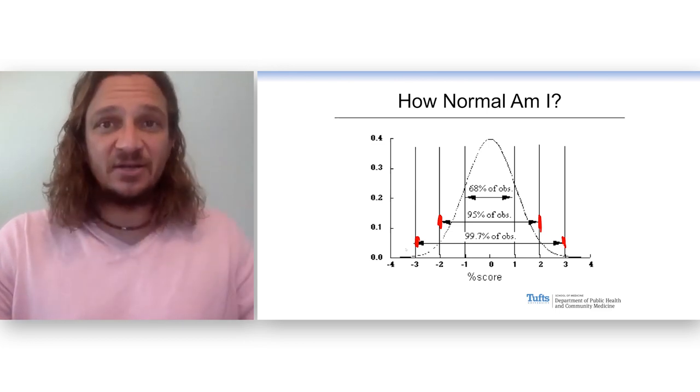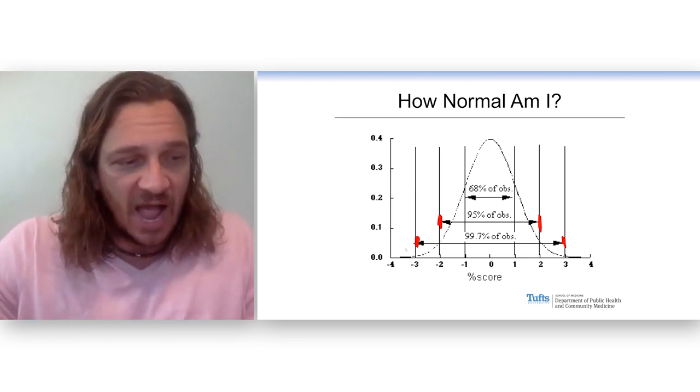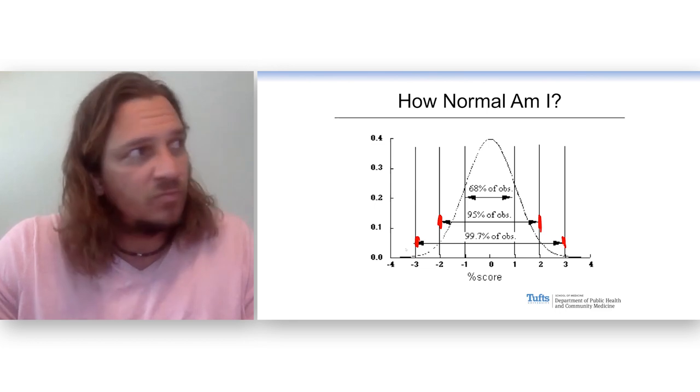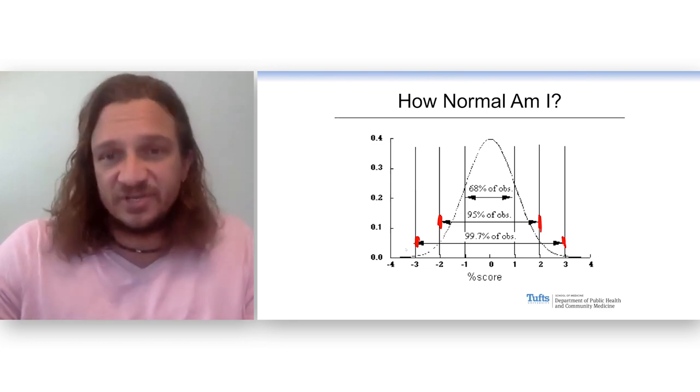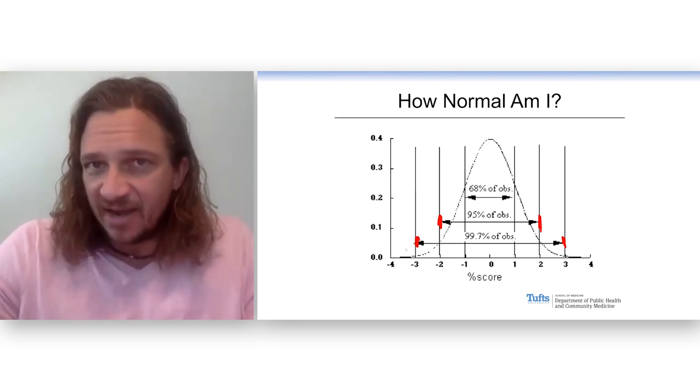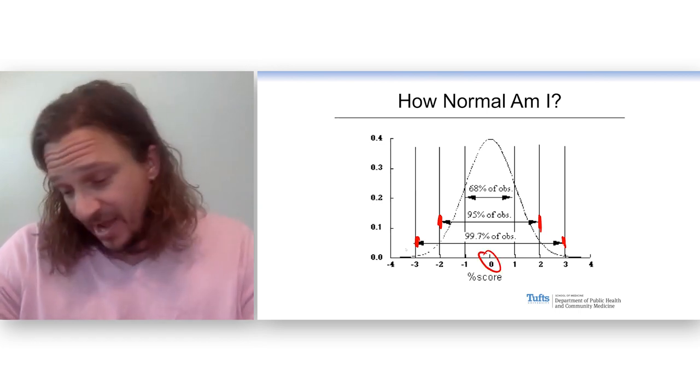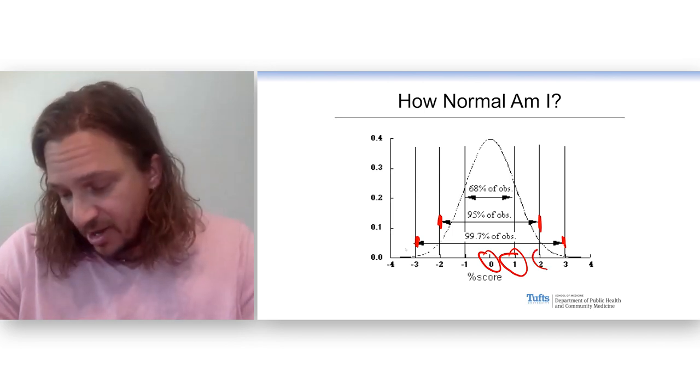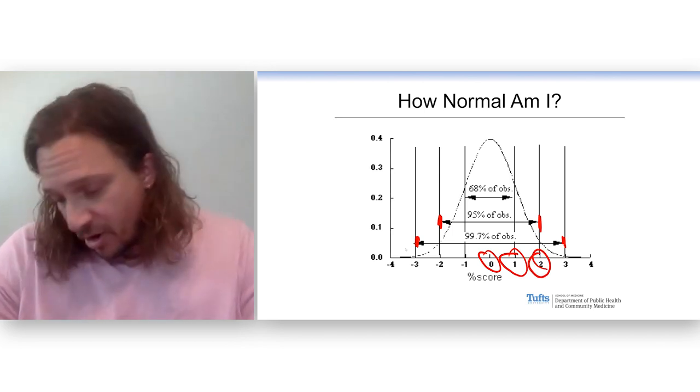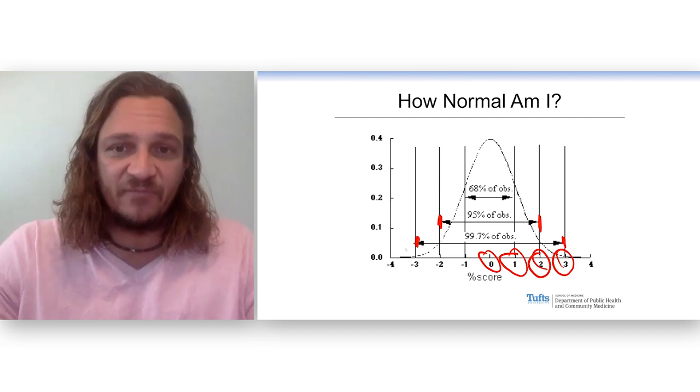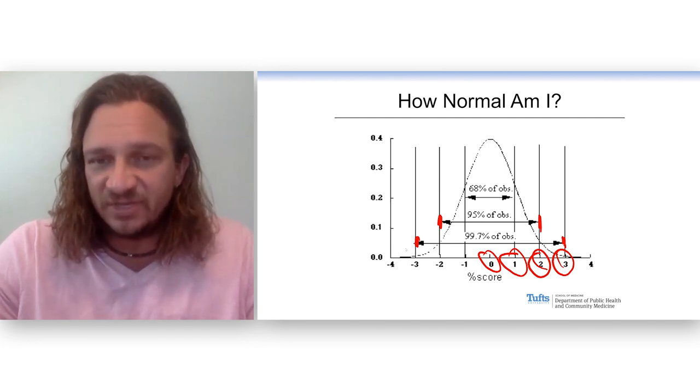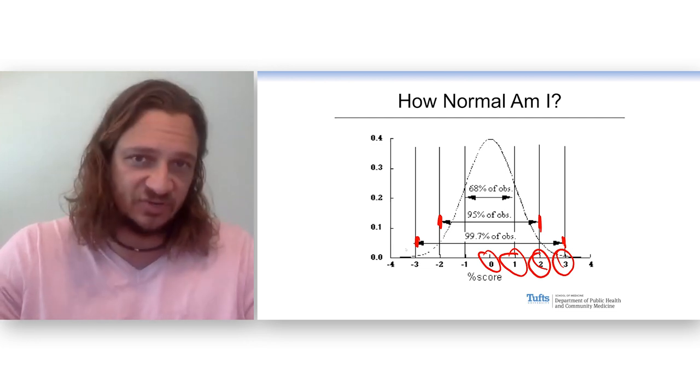Say you take a standardized test and you want to know, how did I do? Well, you got 1,200-something. Well, what is that? It's equal to the mean, or maybe it's one standard deviation above, or two standard deviations, or three standard deviations above. And this gives you a sense that you can reference yourself in this normal distribution.